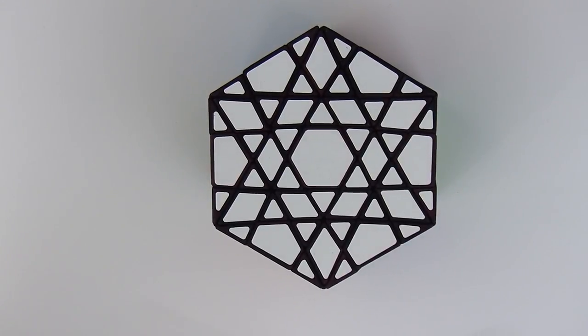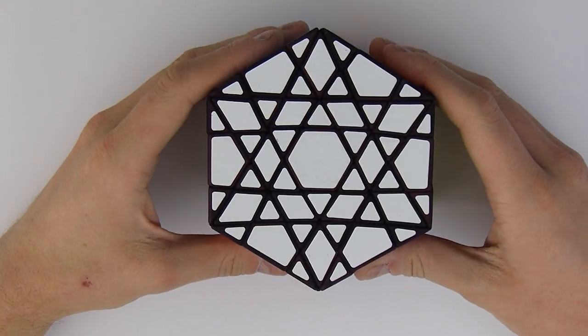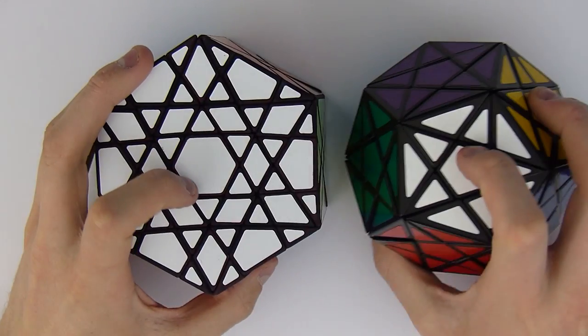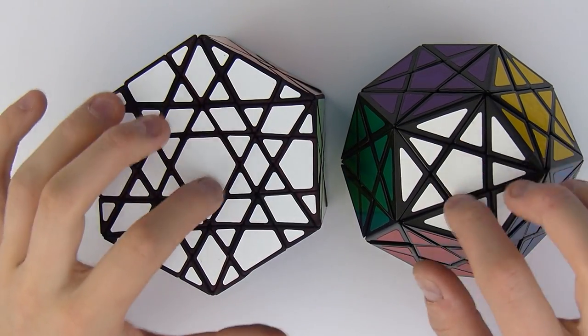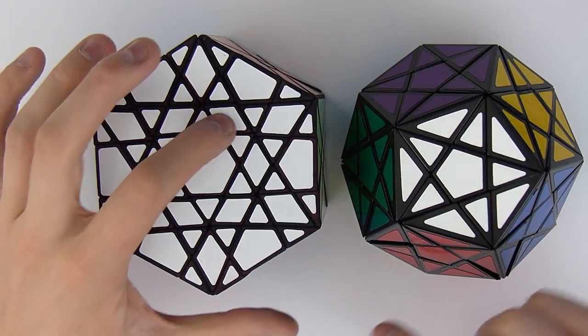So this is what the Hex Ultimate looks like and before I start I want to talk geometry a little bit. Now it's similar to a Star Minx because you see you've got that center, those star tips right there, and something you may have noticed already.